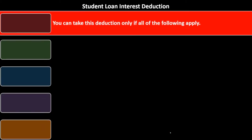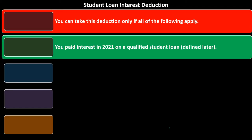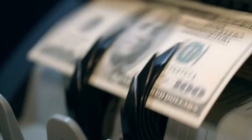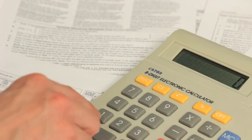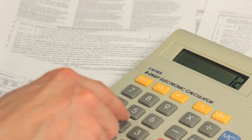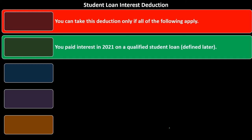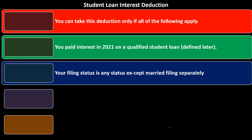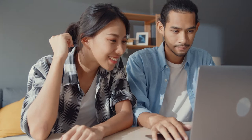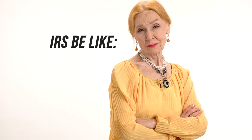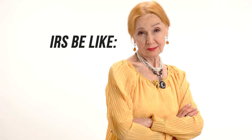You can take the student loan interest deduction only if all of the following apply: you paid interest in 2021 on a qualified student loan — you'll typically get documentation on this, though there can be gray areas. Your filing status is any status except married filing separately.